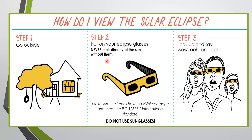Now if you want to go out and you are curious, here are a few things on how to view the solar eclipse. But I must say, it is safer to stay inside the home. If you want to see, there are a few ways. Step number one: go outside your house. Step number two: put on your eclipse glasses — never look directly at the sun without them, as it will damage your eyes. Step number three: look up and say wow, oh, and ah!